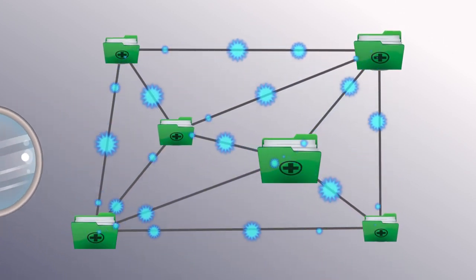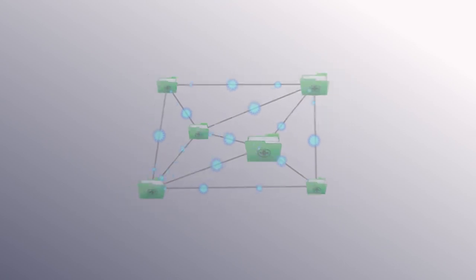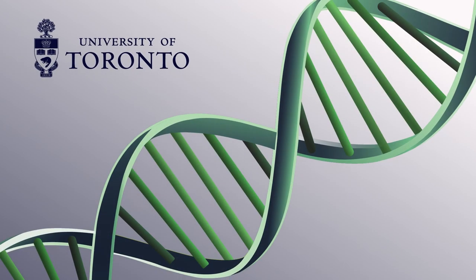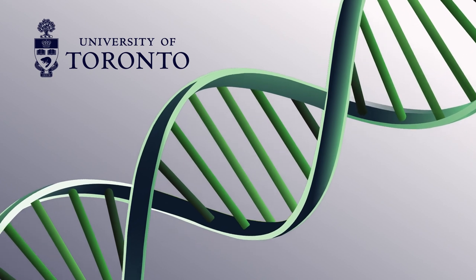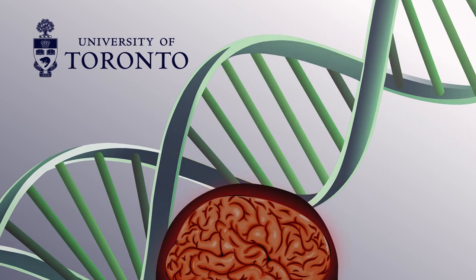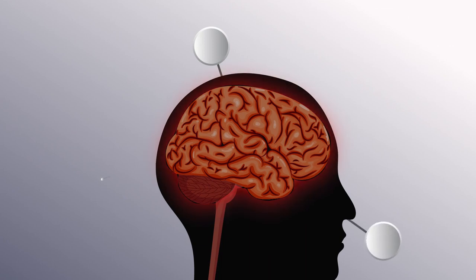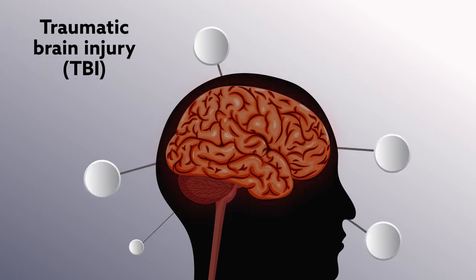How are researchers addressing this problem? One team has drawn inspiration from genomics. Using an algorithm routinely applied to study co-expression patterns of multiple genes, they've identified patterns in the circumstances surrounding people experiencing a traumatic brain injury.